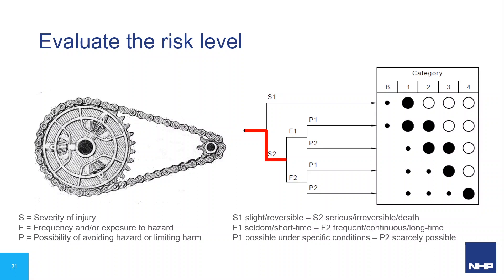We move along to F — frequency of exposure. How often is someone standing in front of this chain and sprocket? If they lubricate the chain maybe once every 6 months taking 30 seconds each time, that's seldom — F1. But if they lubricate it once per shift, 280 days per year, that's more frequent — possibly F2. In this case, let's consider F2 because maintenance is performed once per shift.